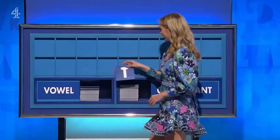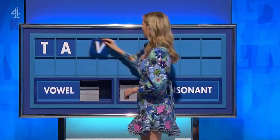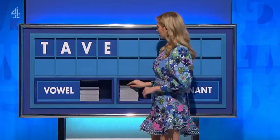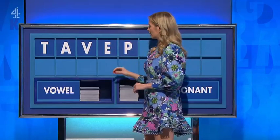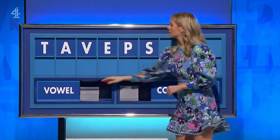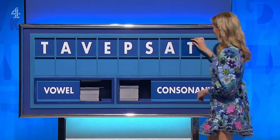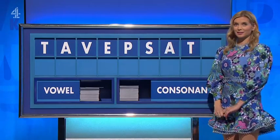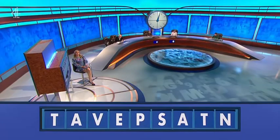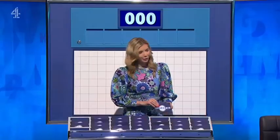Wedgie. Sheila — a vowel: A. Consonant: V. Vowel: E. Consonant: T. Consonant: S. Vowel: A. Consonant: T. Consonant: N. Three. Over to the dictionary corner — and peasant. All sevens, please. Your favourite. Thank you, Adrian.